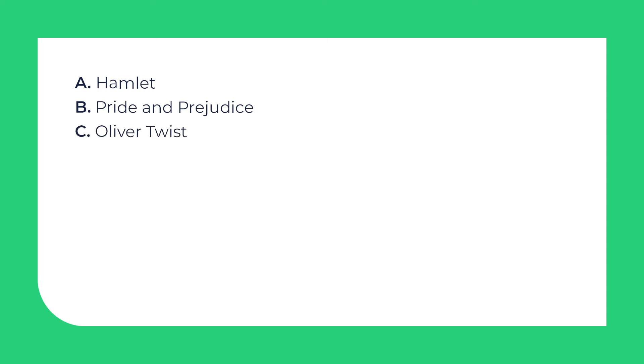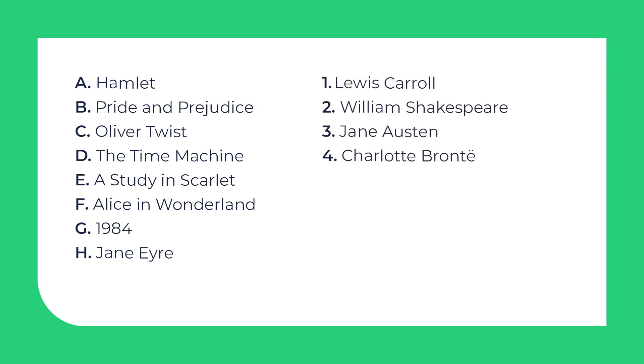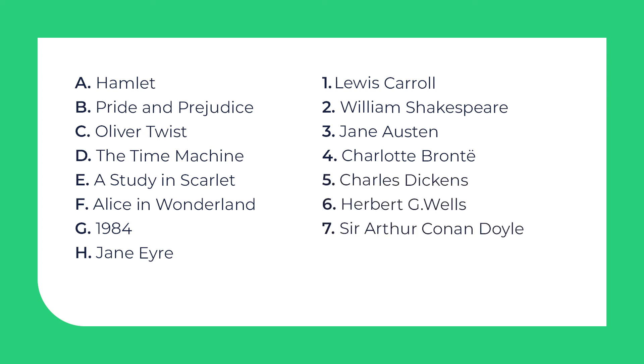Now, can you match the authors with their pieces of literature? In the left column, there are the names of the books and poems. In the right column, there are the names of their authors. Let's check them out! Hamlet, Pride and Prejudice, Oliver Twist, The Time Machine, A Study in Scarlet, Alice in Wonderland, 1984, Jane Eyre. And the authors: Lewis Carroll, William Shakespeare, Jane Austen, Charlotte Bronte, Charles Dickens, Herbert G. Wells, Sir Arthur Conan Doyle, George Orwell. Think and match!